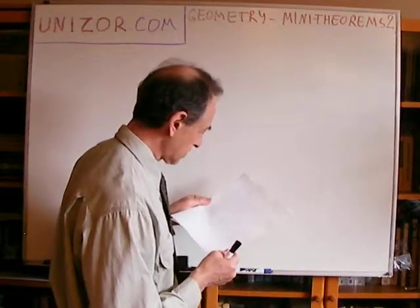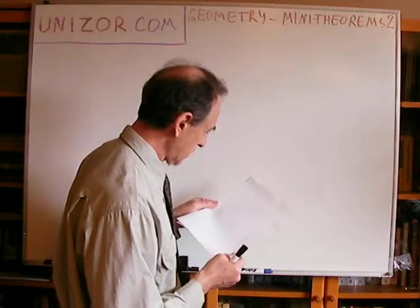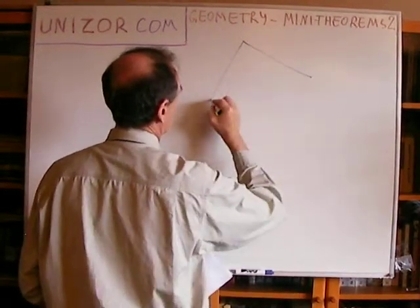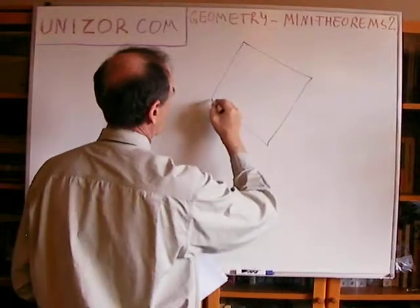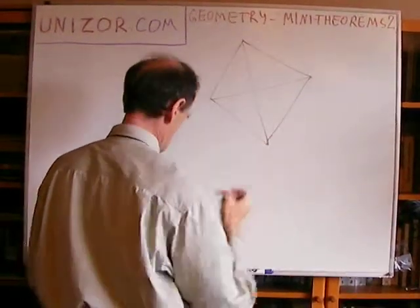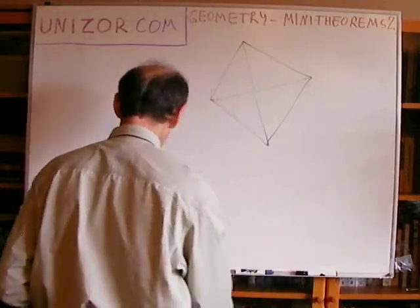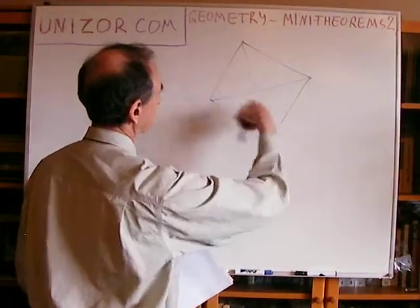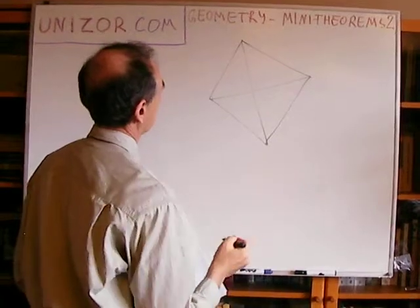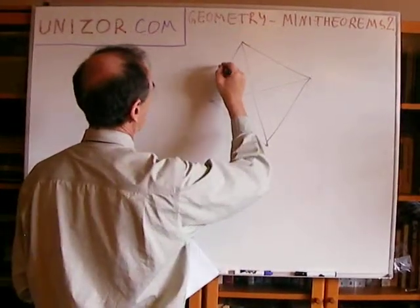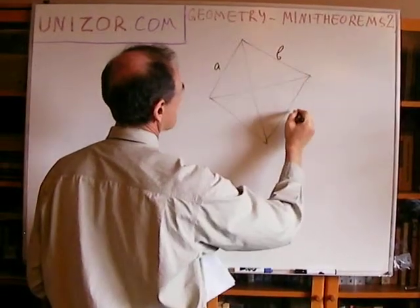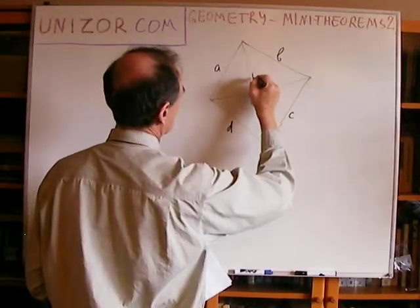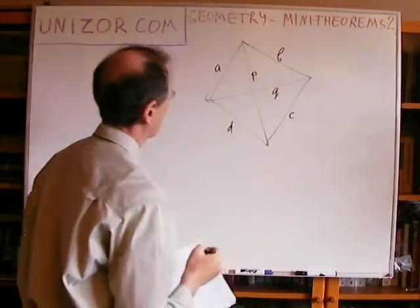Prove that the sum of lengths of two diagonals of a quadrangle is less than its perimeter, but greater than its half perimeter. So you have a quadrangle and two diagonals. What you have to prove is that the sum of these two diagonals is less than the perimeter but greater than half the perimeter. I will use letters to signify the lengths of the sides, and each of the diagonals will also be labeled with letters.